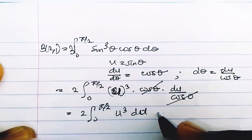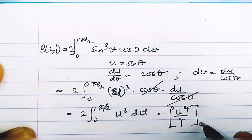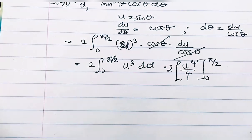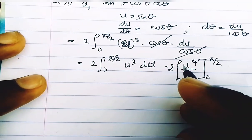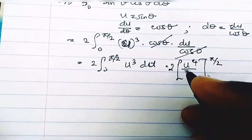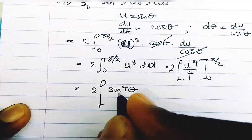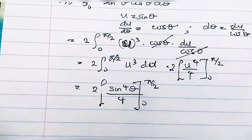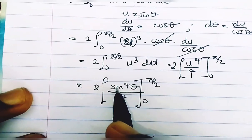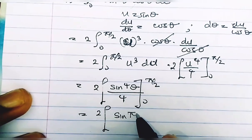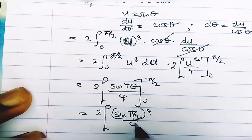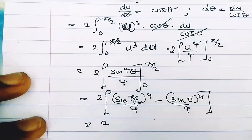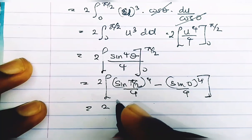Integrating u³ gives u⁴/4. Applying the limits from 0 to π/2 and replacing u with sin(θ), we have 2 · [sin⁴(θ)/4] from 0 to π/2. Applying the limits: sin(π/2) = sin(90°) = 1, so the upper limit gives 1⁴/4 = 1/4, and the lower limit gives sin(0)⁴/4 = 0.